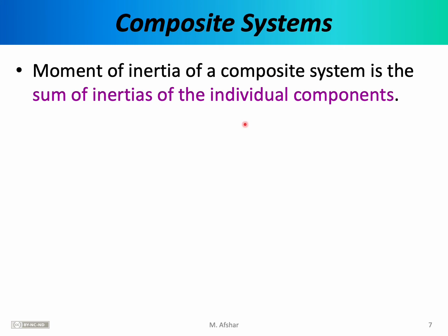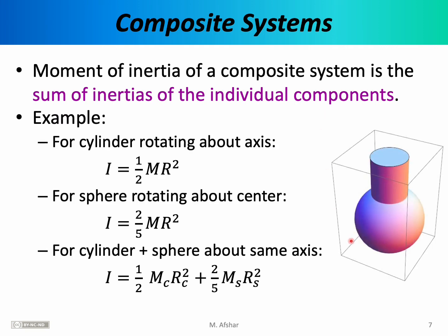As we just explained, if you want to calculate the moment of inertia of a complicated shape, you can break it down into simpler shapes. The moment of inertia of a composite system is the sum of the inertias of the individual components. So once you've broken a complicated shape into simpler shapes, you calculate the moment of inertia of each simple shape and add them together. As an example, consider an object consisting of a sphere welded to a cylinder.